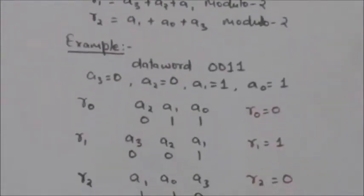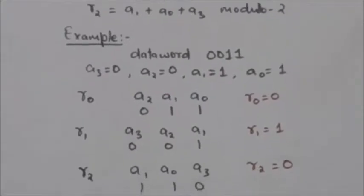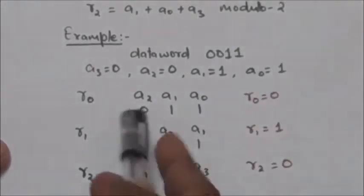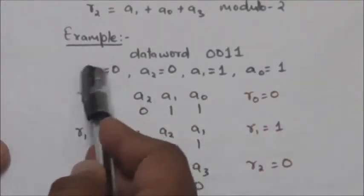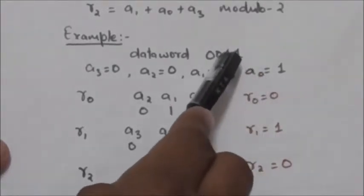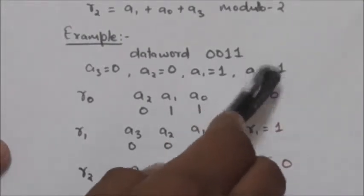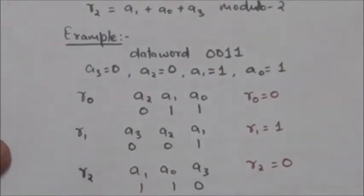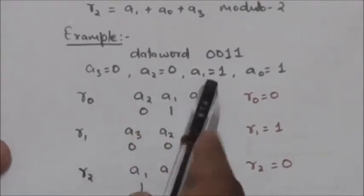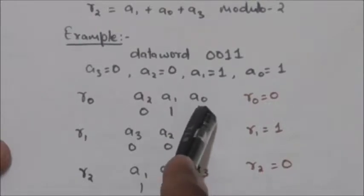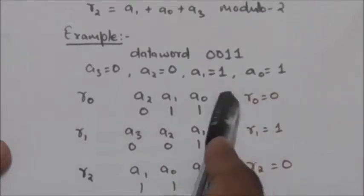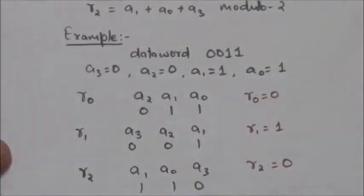Now let us consider this example. Suppose there is a data word 0011. So bit a3 is equal to 0, a2 is equal to 0, a1 is equal to 1, and a0 is also equal to 1. Now we will find the value of check bits r0, r1, and r2. r0 is the parity bit of a2, a1, and a0, which is 0, 1, 1. Since 0,1,1 has an even number of ones, r0 will be 0.